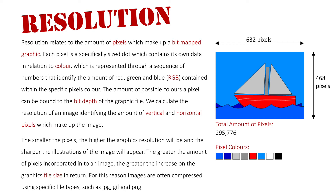The smaller the pixels, the higher the graphics resolution will be and the sharper the image will appear. However, the greater the amount of pixels incorporated into the image, the greater the increase in the graphics file size. For this reason, images are often compressed using file types such as JPG, GIF, and PNG. This covers resolution in relation to the image itself.